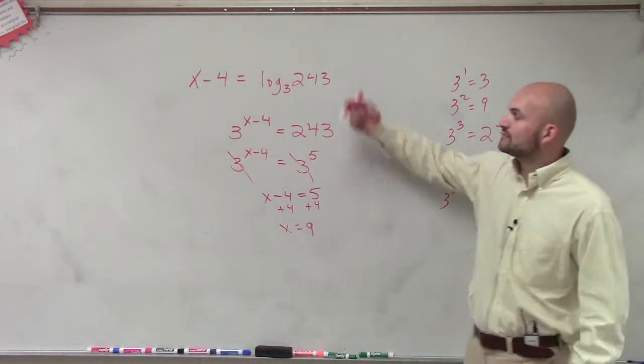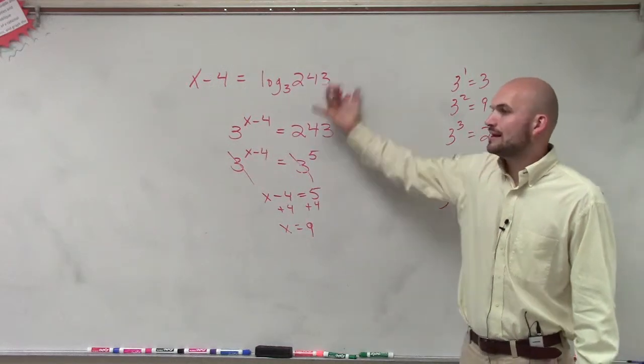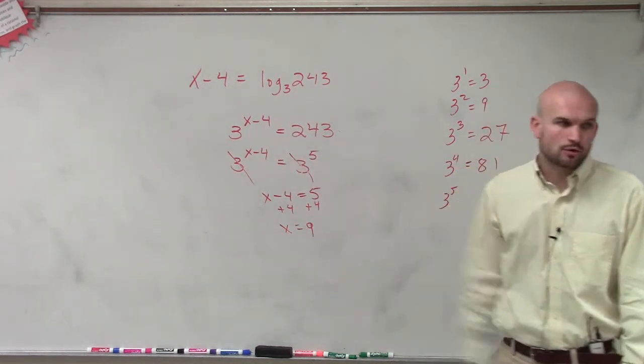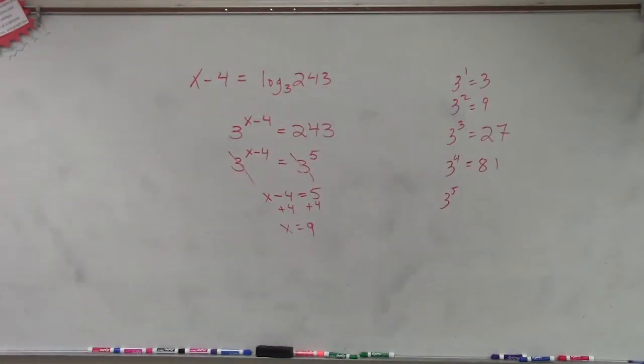The main important thing that we did for our homework was taking it from logarithmic to exponential. And then once you have an exponential, you can either evaluate or use the equality property of exponents. I rewrote 243 as 3 raised to the fifth, and the reason why I had to write it as 3 raised to the fifth...